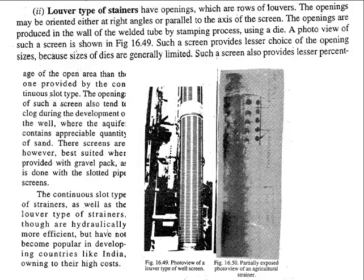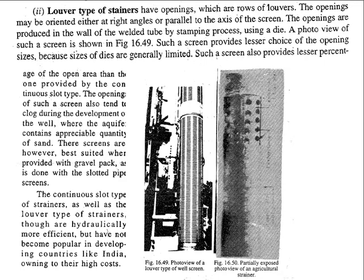The next type is the louver type strainer. As you can see from the diagram, a louver type strainer has slots or openings provided in rows, which can be adjacent or parallel to the axis of the bore well. These slots are formed by wrapping wire around steel metallic pipes that have perforations, and this arrangement prevents the entry of fine particles from the aquifer, restricting impurities from entering the bore well.